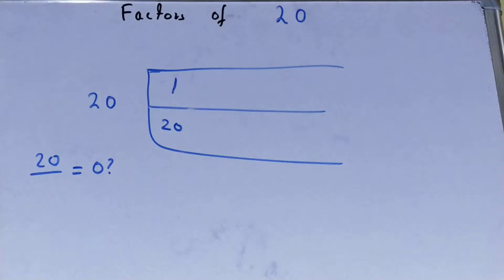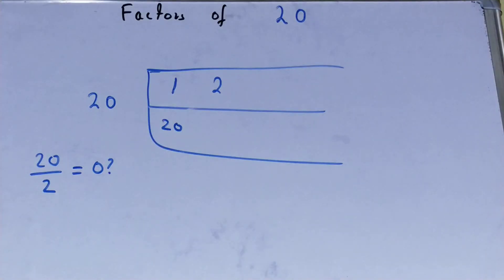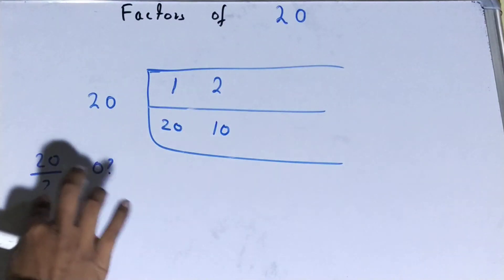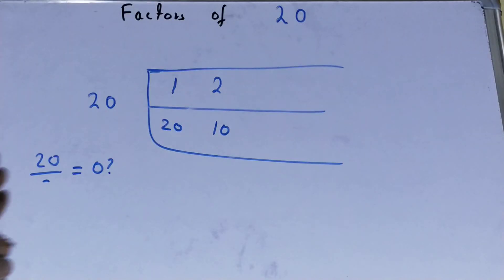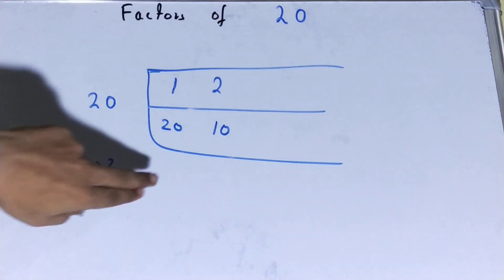Now let's keep 2. Will I get the remainder as 0? Yes, I will get. So 2 is a factor, and 2 into what times is 20? 2 into 10 times is 20. So 2 is a factor and 10 is also a factor. Like this we are finding factors from beginning and last also.